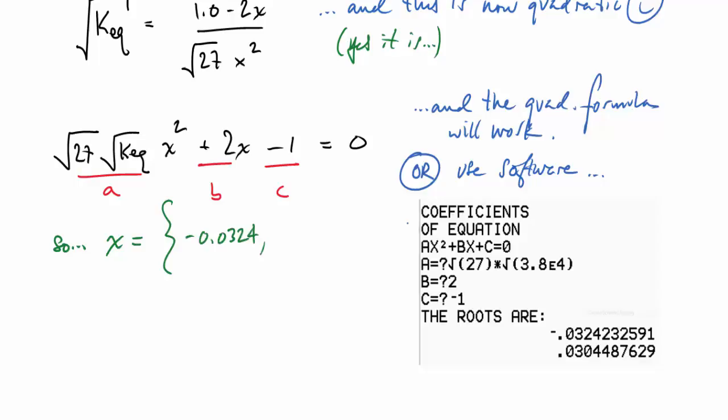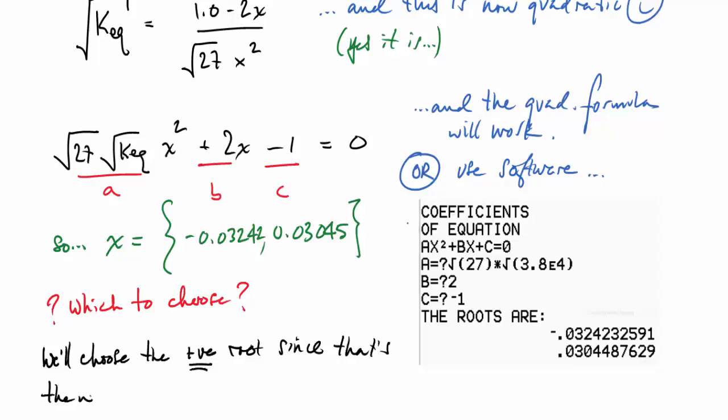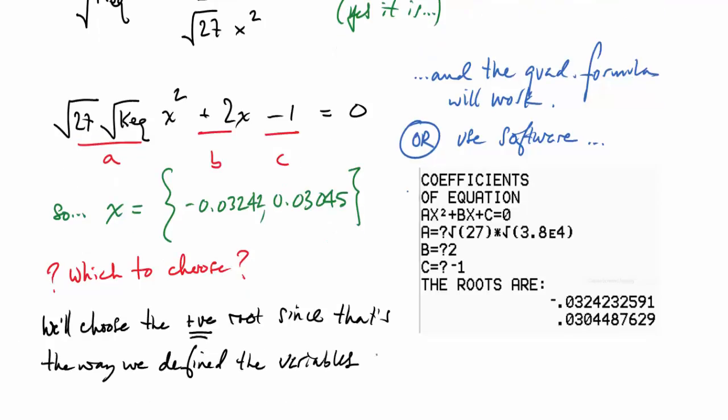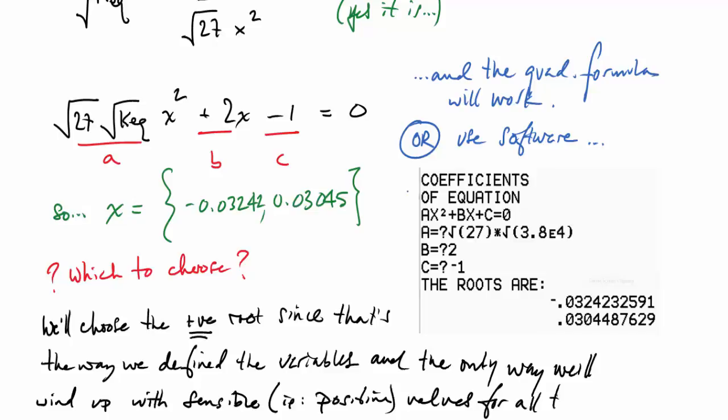So here we have two values for the x value or the change in equilibrium concentration. And you might wonder which value should I choose? Well, here we're going to choose the positive value. The positive root is the one that's going to give us useful, meaningful, positive concentrations. And that's also the way we set up the equation, so that's the way it's going to work out. Remember, you can't have negative concentrations for any of these constituents at equilibrium.